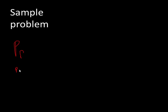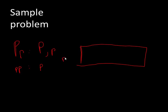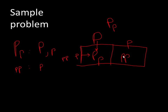Now that I know the genotypes — big P, little p for one parent and little p, little p for the other — I can think about what gametes they make in meiosis. The heterozygous parent passes on either big P or little p, while the homozygous recessive parent can only pass on little p. So I make a one-by-two Punnett diagram: one parent makes only the little p gamete, the other makes both big P and little p. The possible offspring are big P, little p, or little p, little p.